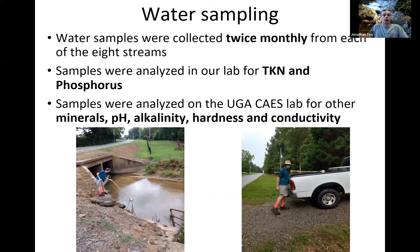For water sampling, we sampled twice monthly at each of the eight streams. Samples were taken back to our lab to analyze for TK and phosphorus, and the remainder were sent to the UGA CAS Water Lab for other minerals, pH, alkalinity, hardness, and a full battery of tests.